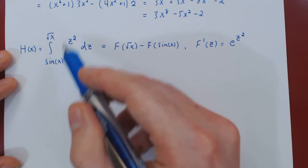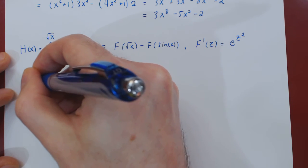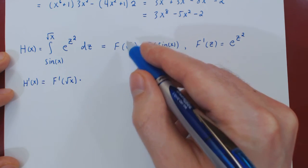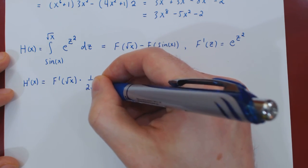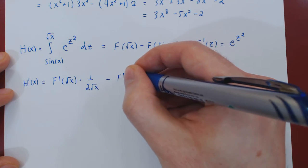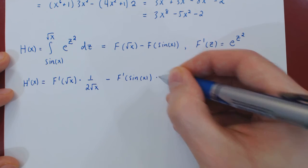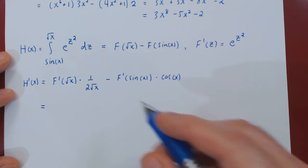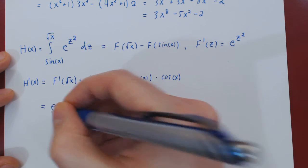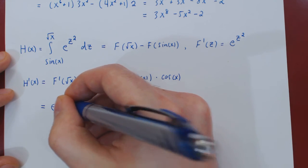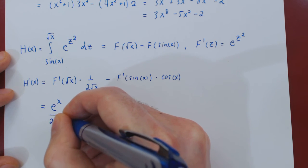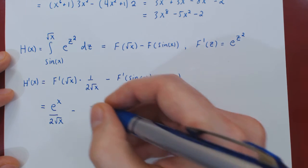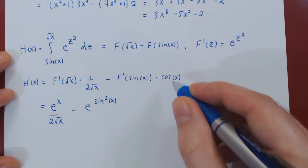When we differentiate h(x), we differentiate this theoretical form, not the original integral. Applying the chain rule: F′(√x) times the derivative of √x, which is 1/(2√x), minus F′(sin x) times the derivative of sin x, which is cos x. Now substituting: replacing z by √x gives e^((√x)²) = e^x, so the first term is e^x / (2√x). Replacing z by sin x gives e^(sin²x), so the second term is e^(sin²x) · cos x.